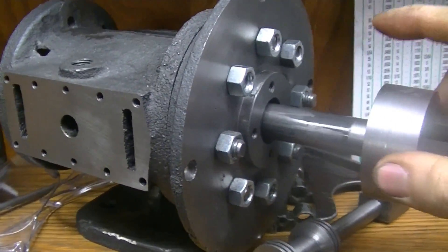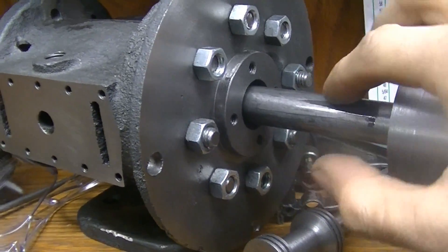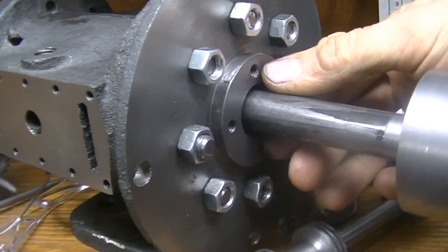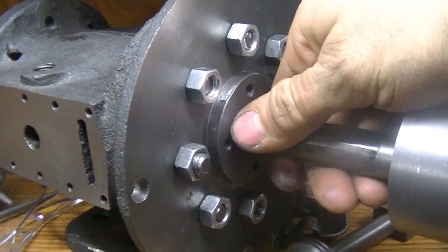Today we are making the stuffing box. The shaft's gonna go through it and go in this recess. We're gonna put packing in it and then bolt it down, and that's gonna seal around the shaft.